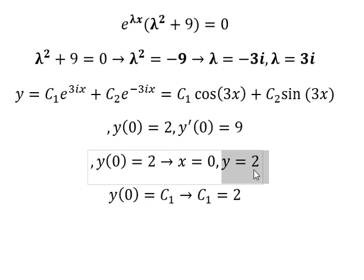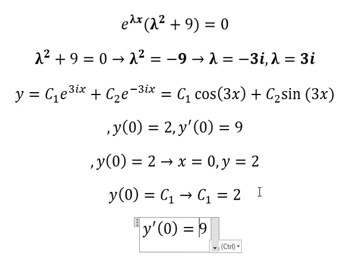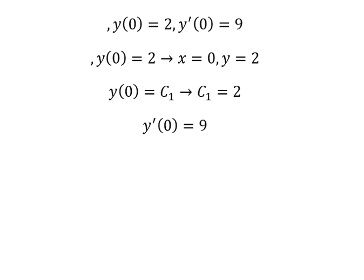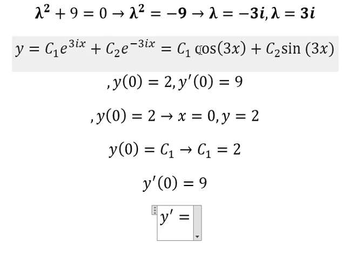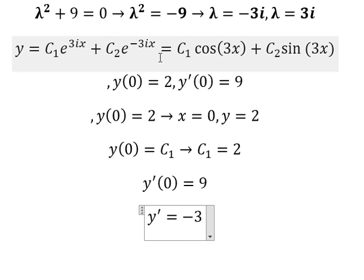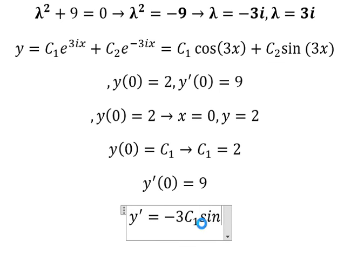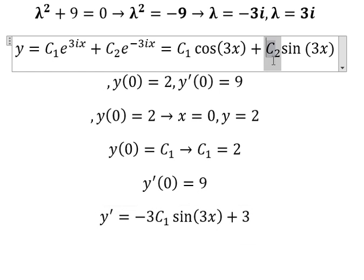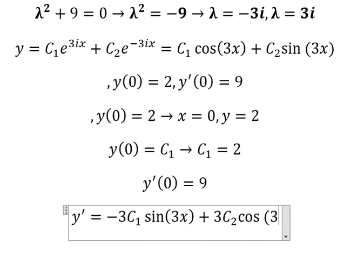Now we move to the next condition. We need to find the first derivative of the solution. The first derivative of cos(3x) gives us negative 3 sin(3x) for the c1 term, plus 3 c2 cos(3x).